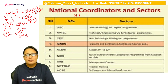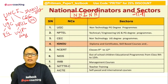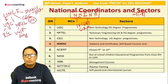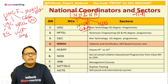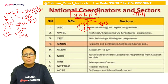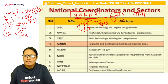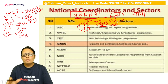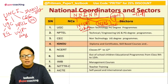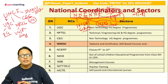अगला keyword है NINA — NANI का उल्टा। NINA के अंदर: पहला N — NCRT (school education), दूसरा I — IIM Bangalore (management education), तीसरा N — NIOS (open schooling / out of school children, class 5th to 12th), और A — AICTE (self-paced and international courses)। Management की बात आती है तो IIM Bangalore, teacher training के लिए NITTTR, और AICTE self-paced के साथ deal करता है।